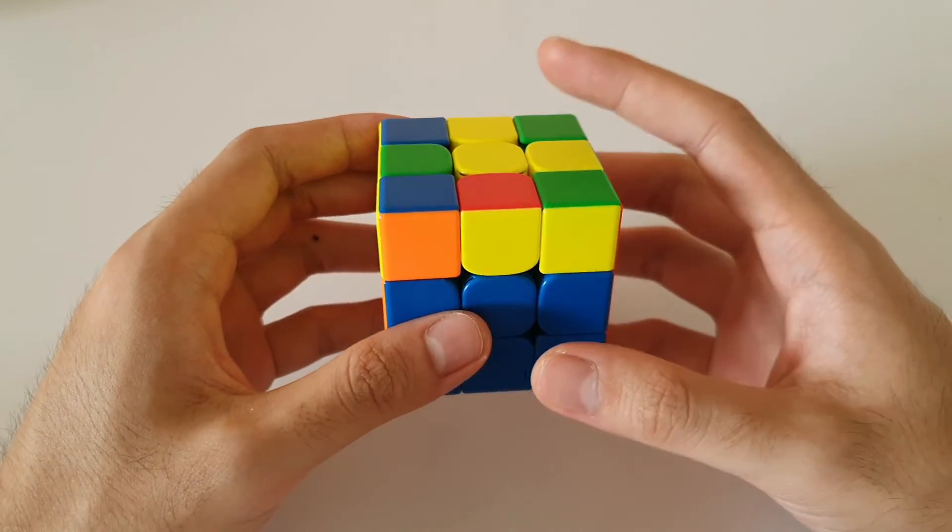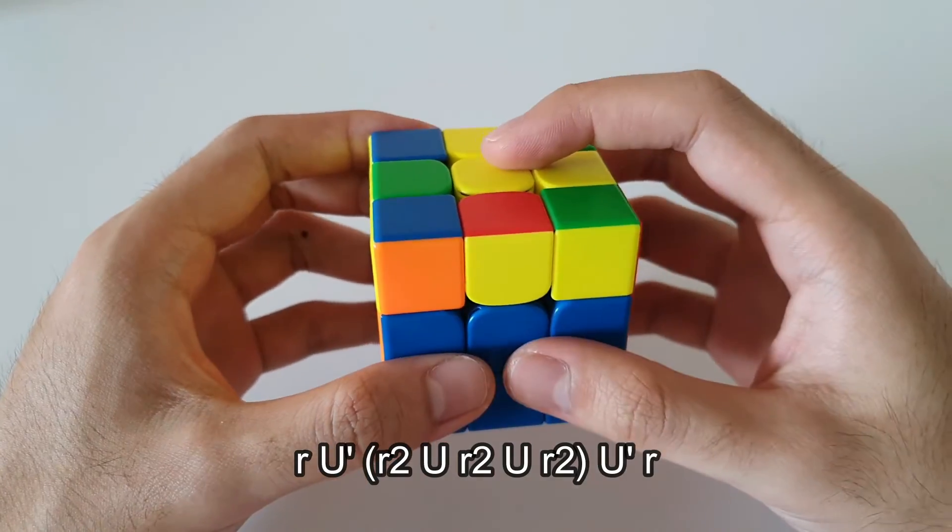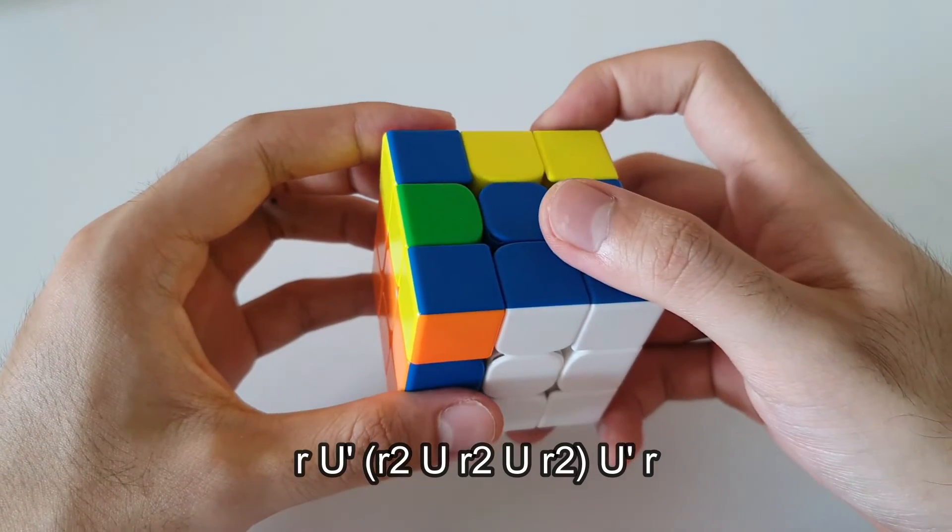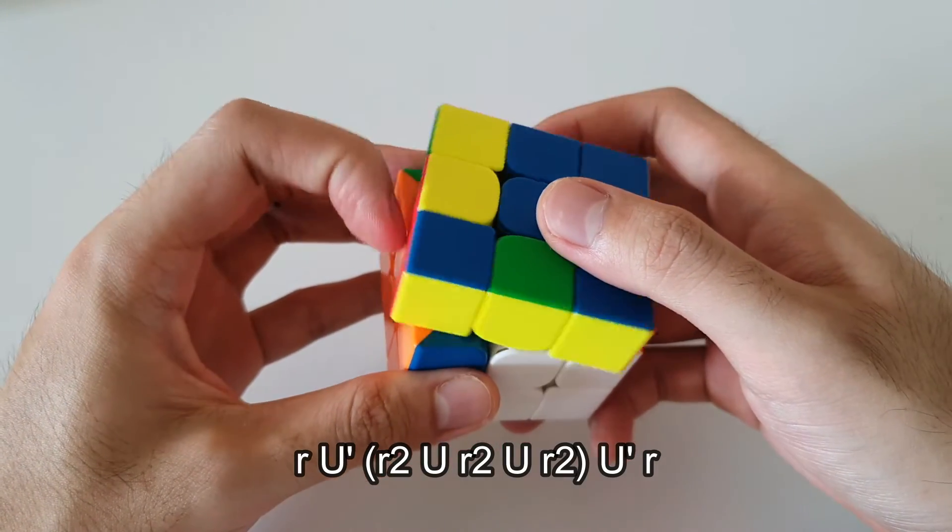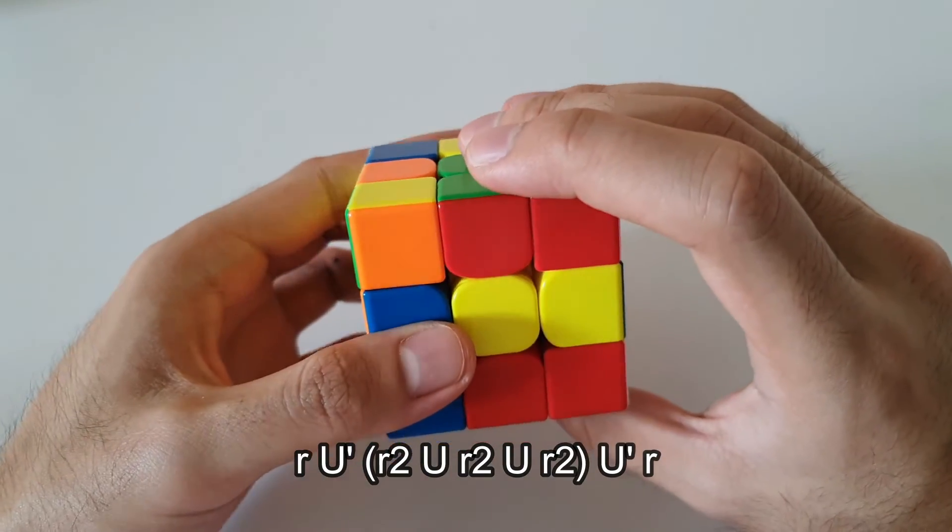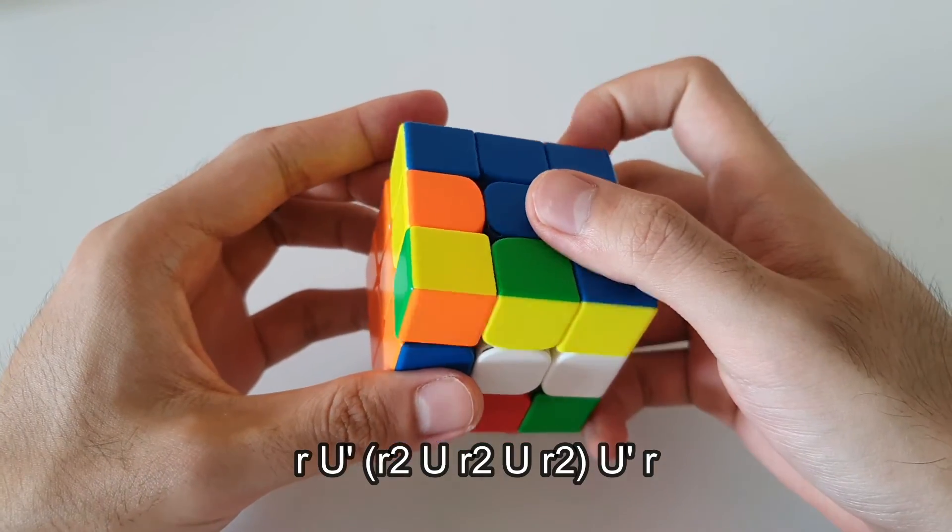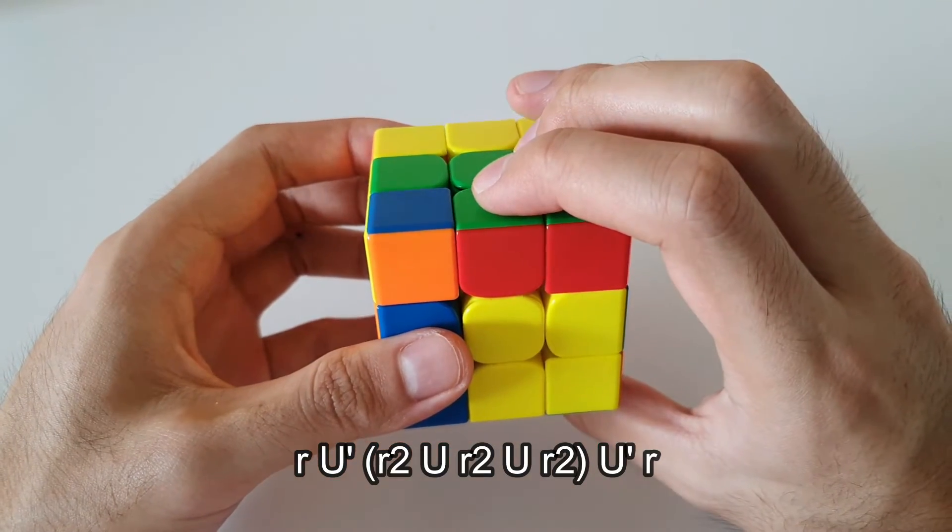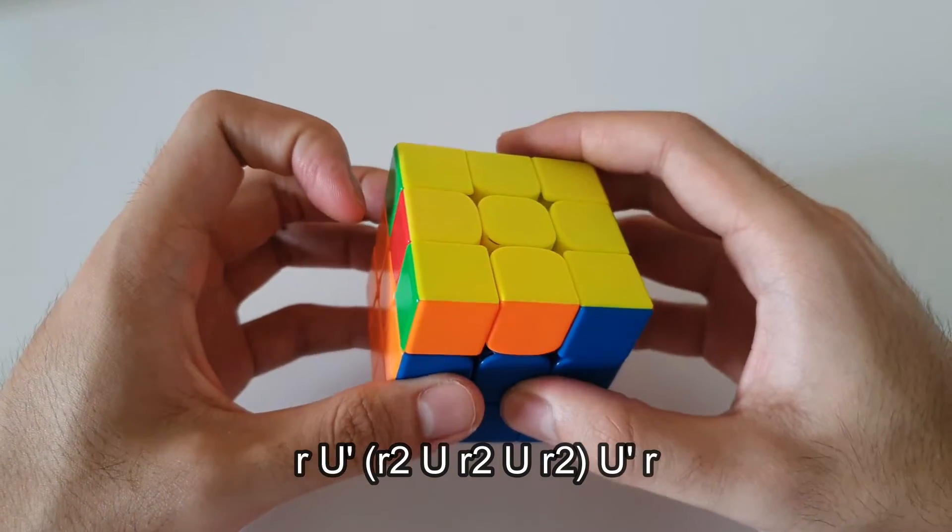The algorithm will go something like this. So the algorithm starts with a wide R move, followed by a U prime, wide R2, U, wide R2, U, wide R2, U, wide R.